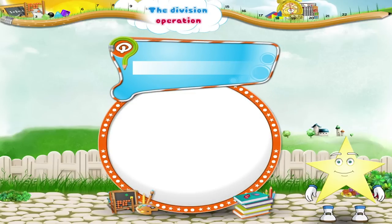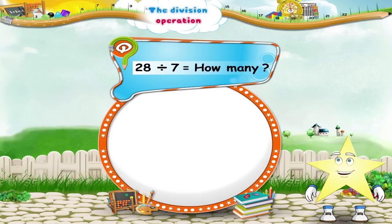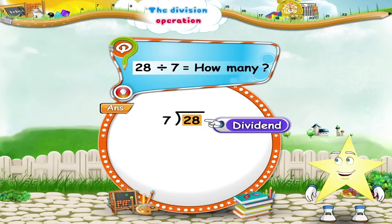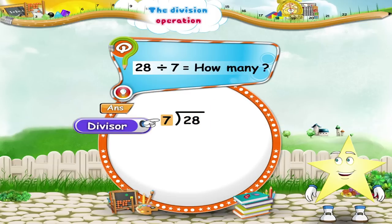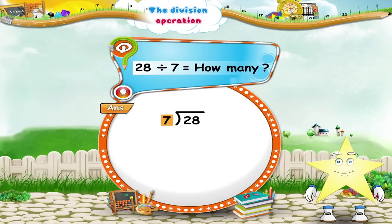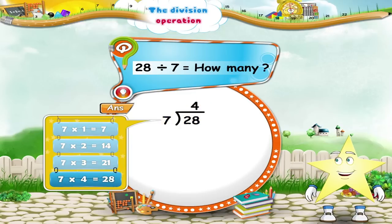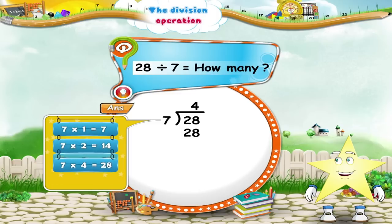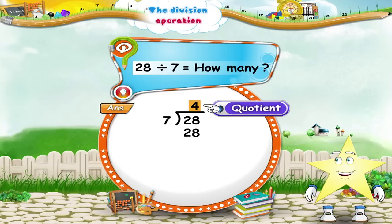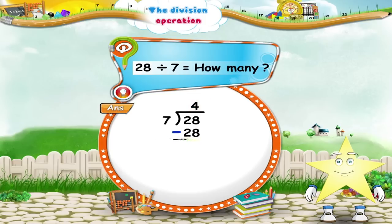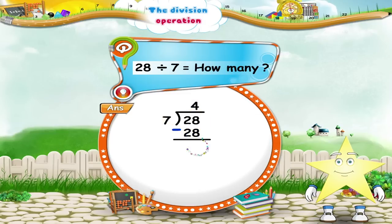Now, let us try 28 divided by 7. 28 is the Dividend and 7 is the Divisor. Say the 7 times table up to 28. 7 4's are 28. Hence, 4 is the quotient. Next, subtract the product of 7 and 4 from the given 28. The remainder is 0.